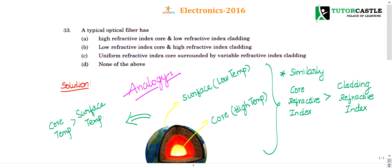Question number 33. A typical optical fiber has: high refractive index core and low refractive index cladding, low refractive index core and high refractive index cladding, uniform refractive index core surrounded by variable refractive index cladding, or none of the above. Everybody knows that if...